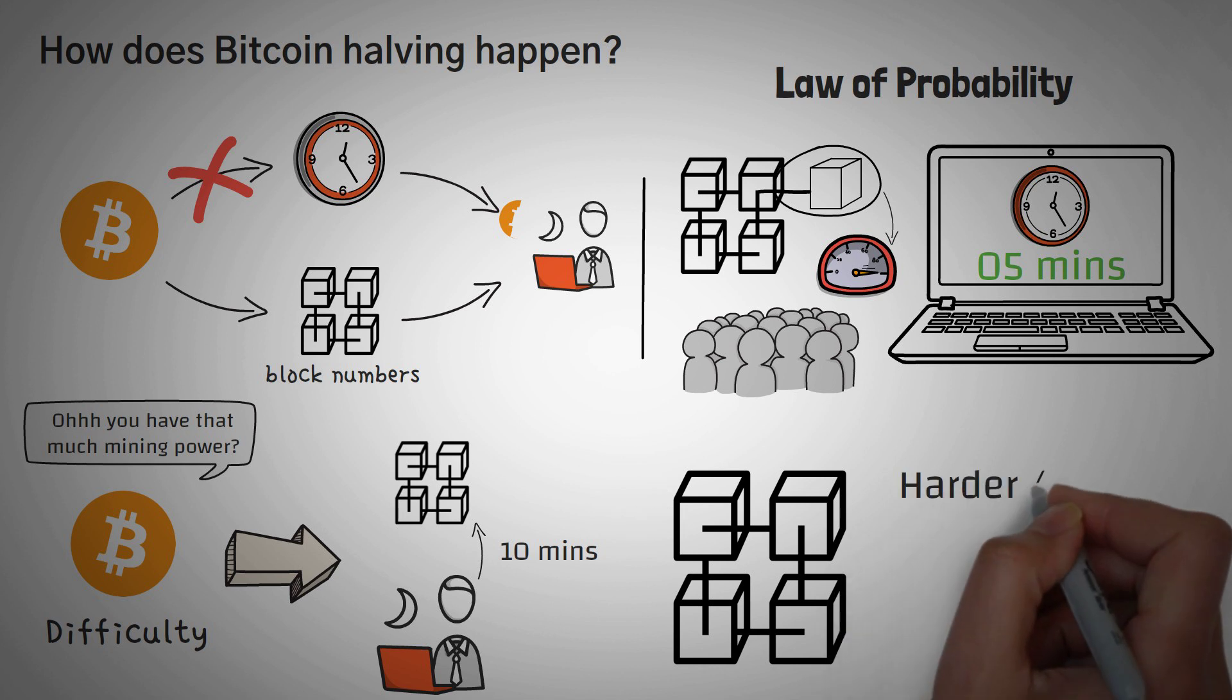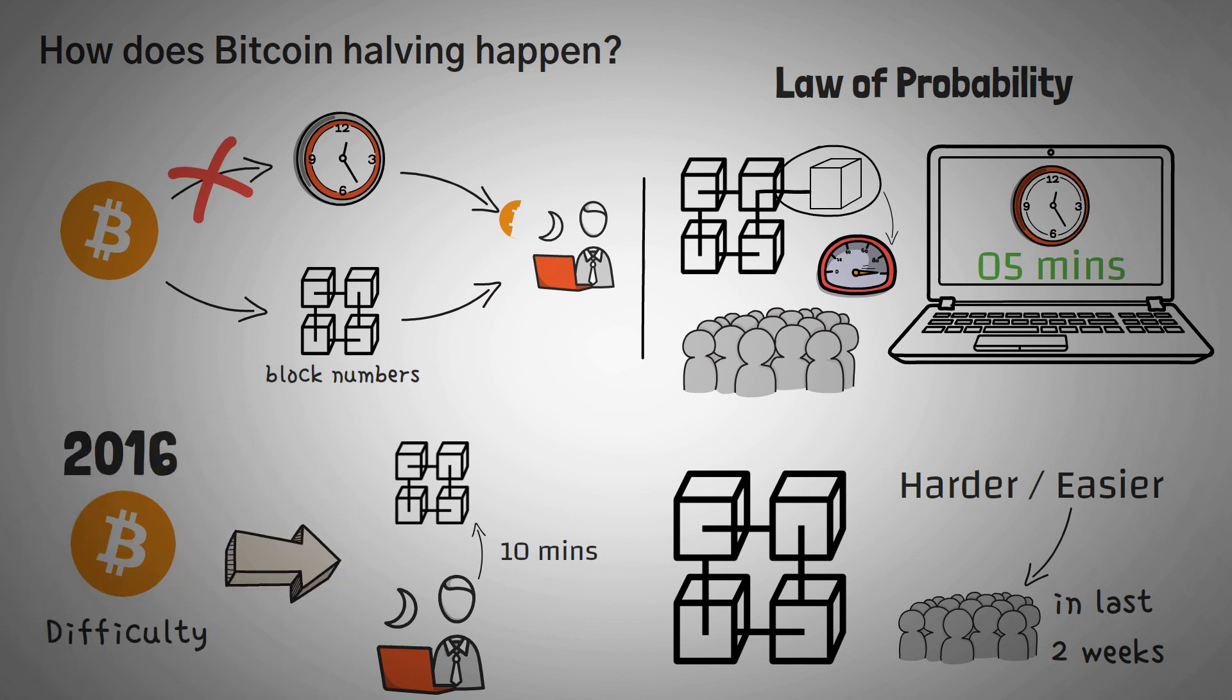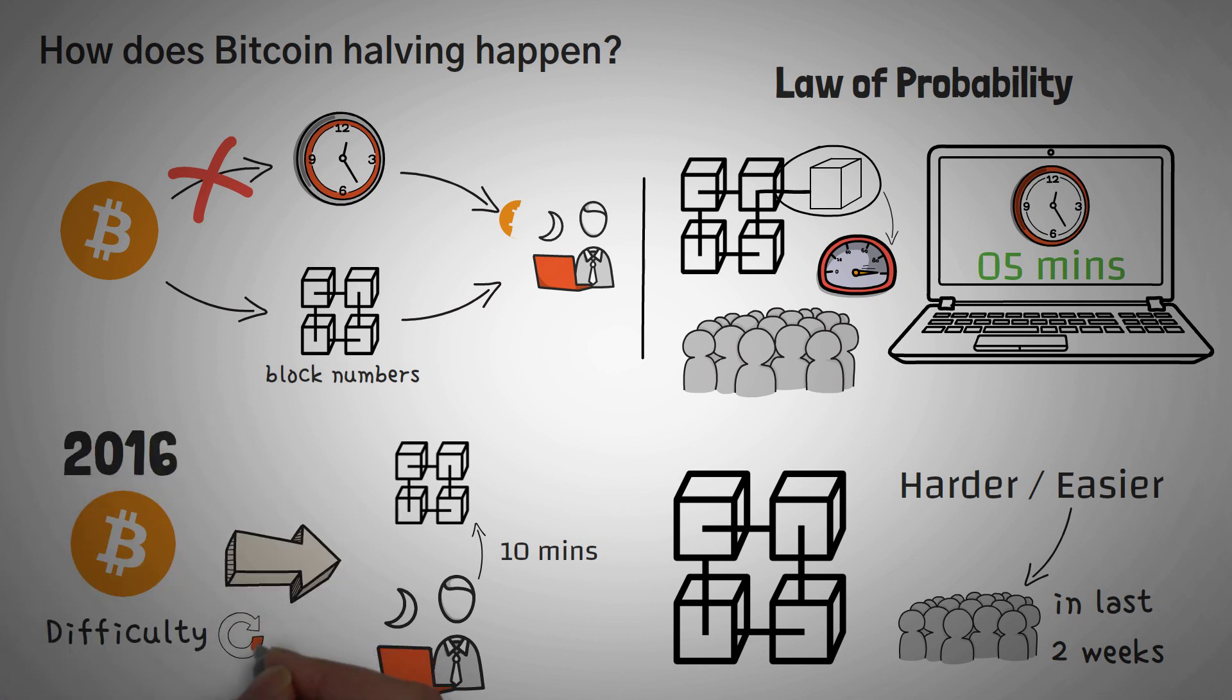In other words, Bitcoin makes the problem to solve the block harder or easier, depending on how many miners there were in the last two weeks. Basically, every two weeks, it adjusts itself. That's right, every two weeks, or actually, 2016 blocks, Bitcoin will change its difficulty so that the average block, or the problem that is solved, is solved in 10 minutes.